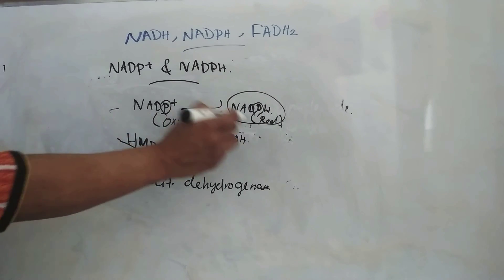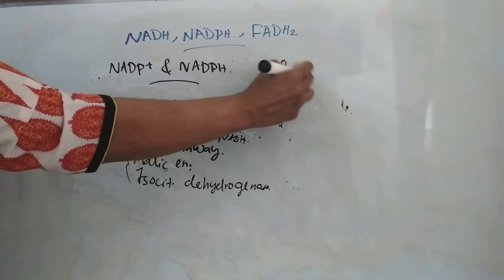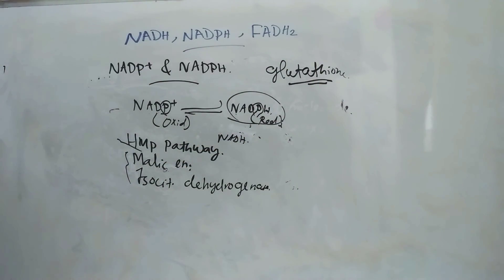This NADPH which has no role in the formation of ATP. And the main function of this NADPH is it maintains glutathione in its reduced form.